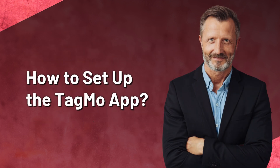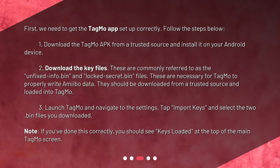How to set up the Tagmo app? First, download the Tagmo APK from a trusted source and install it on your Android device. Second, download the key files — these are commonly referred to as the UnfixedInfo.bin and LockedSecret.bin files. These are necessary for Tagmo to properly write amiibo data, and should be downloaded from a trusted source and loaded into Tagmo.